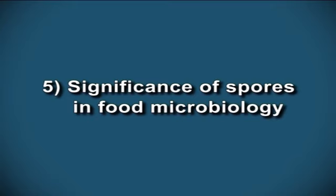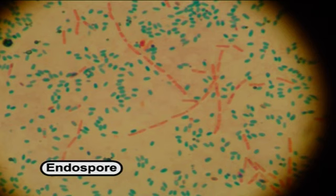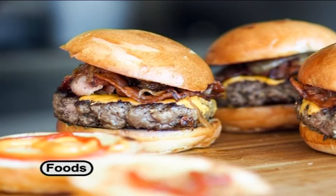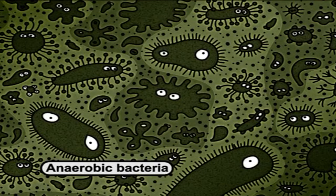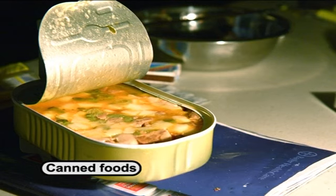Now we will know about the significance of spores in food microbiology. Spores of either bacteria or fungi have several roles in food microbiology. Endospore-forming bacteria may enter foods either directly or indirectly through soil. Endospores are produced by both aerobic and anaerobic bacteria. Endospores can create spoilage in foods, especially in canned foods. If the heat treatment is improper, the heating process may kill vegetative cells of bacteria; however, it can activate the endospores, leading to the growth of spore-forming bacteria which can then grow in the food.